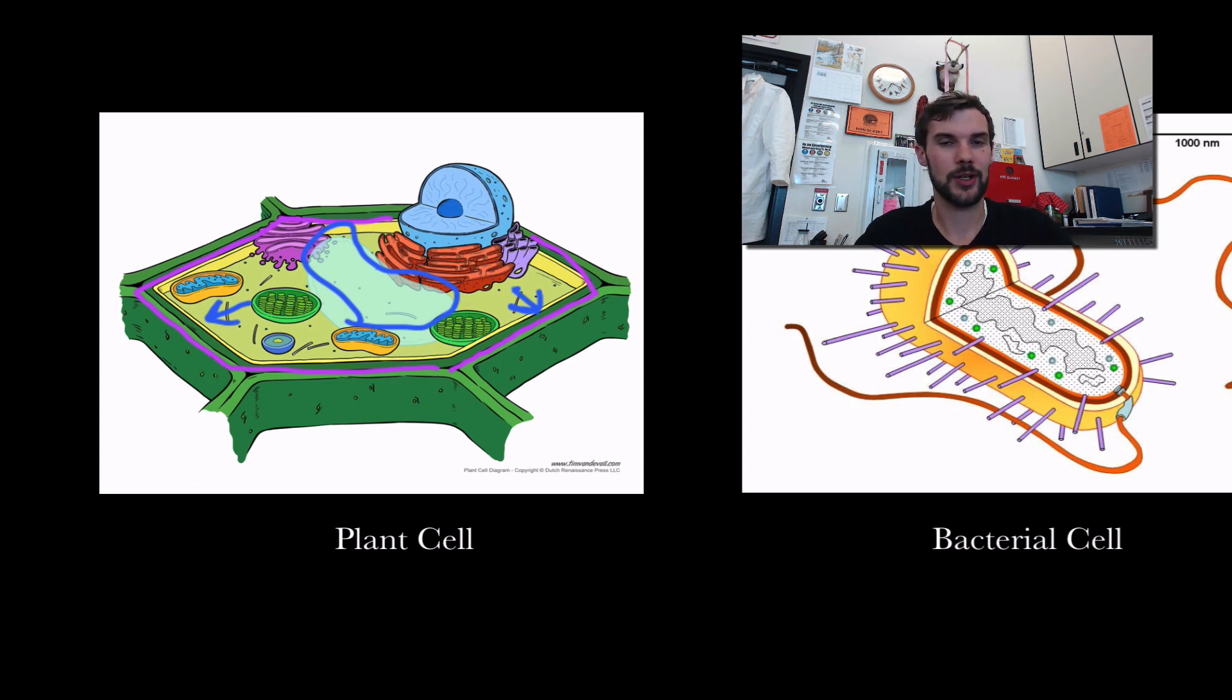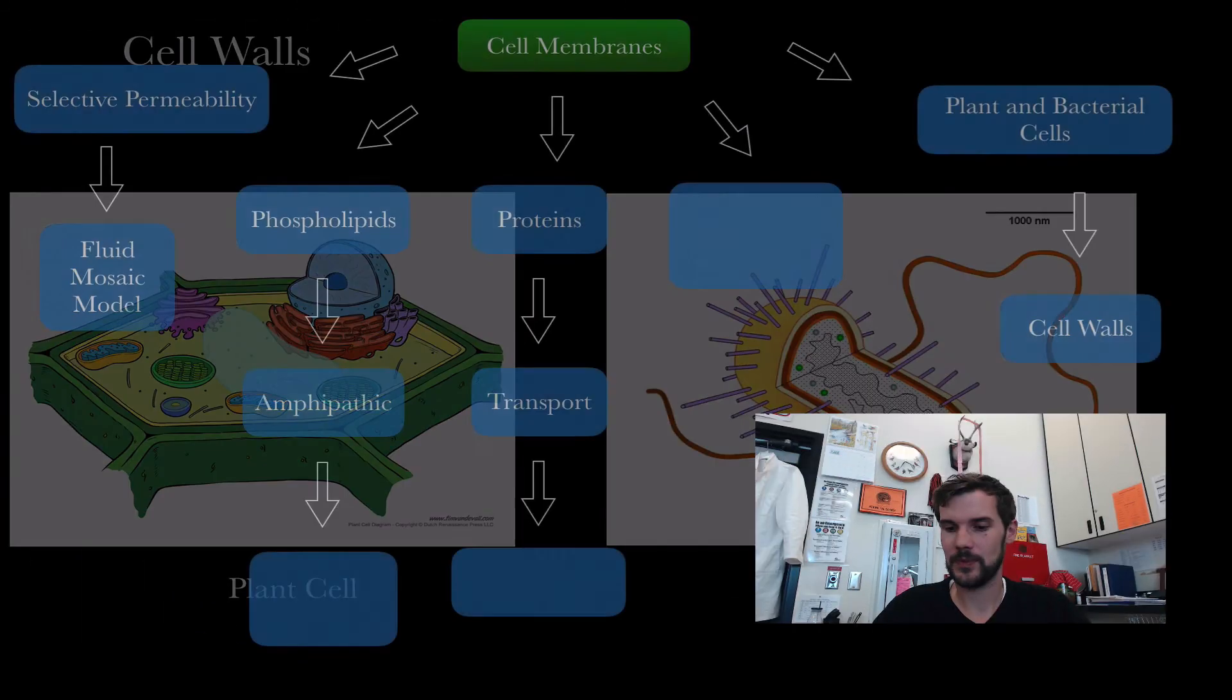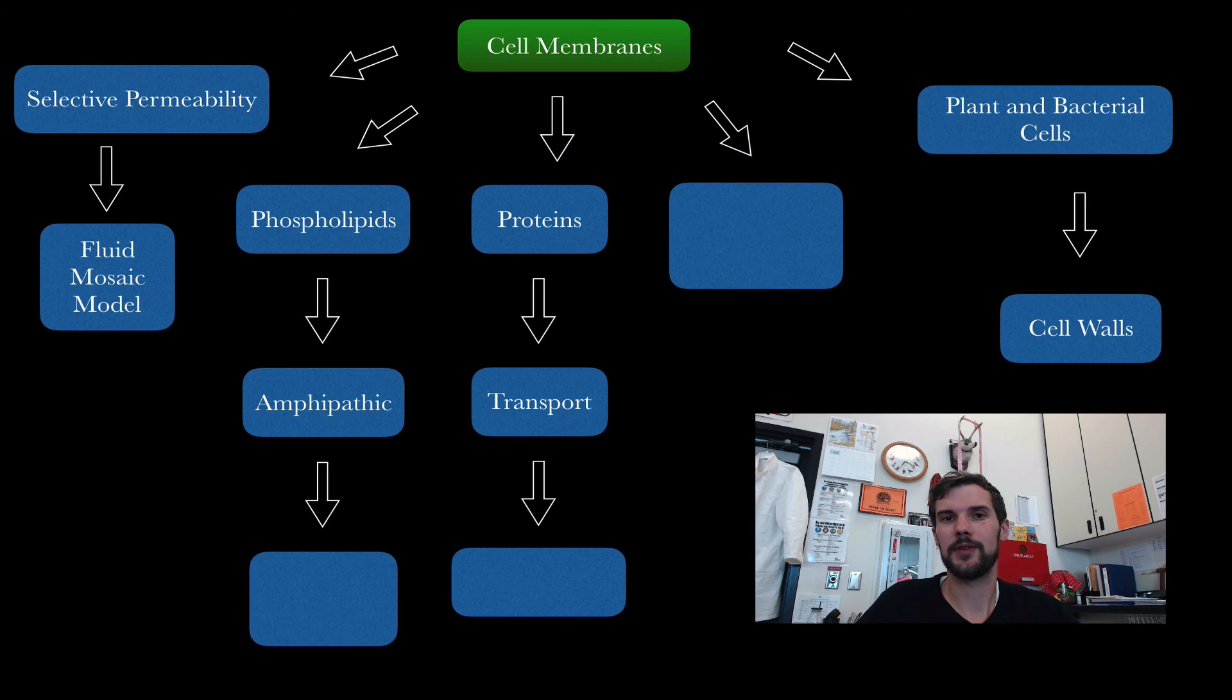Bacterial cells also have a cell wall and it acts a little different. It's made up not of cellulose but a different compound, and it will aid in the protection of the bacteria and keep things in and keep things out as well. All right, so go back and see if you can fill in the missing items. Thanks for watching, bye.